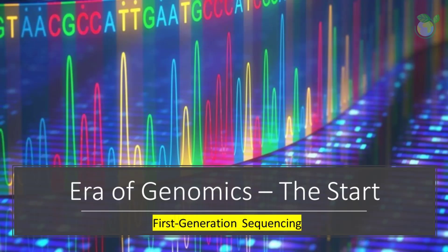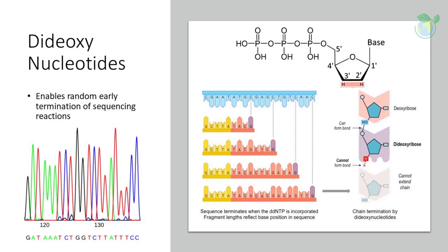First-generation sequencing started the era of genomics. DNA sequencing technology began in the late 1970s, when Friedrich Sanger developed a method that used a DNA polymerase with a combination of standard and chain-terminating nucleotides, known as DDNTPs. This method caused random early termination of sequencing reactions during PCR and was run in four reactions, each with the chain-terminating version of one base.